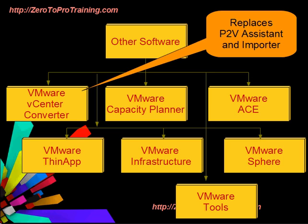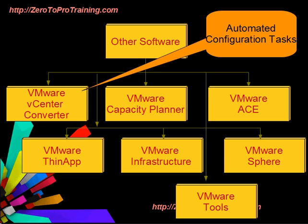VMware vCenter Converter replaces the older VMware products P2V Assistant and Importer. P2V Assistant allowed users to convert physical machines into virtual machines. Importer allowed the import of virtual machines from other products into VMware Workstation. Besides conversions, VMware vCenter Converter is also used to run automated configuration tasks on VMware ESX or ESXi servers.